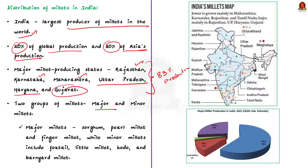Two groups of millets are grown in India — major millets and minor millets. The major millets include sorghum, pearl millet or bajra, and finger millet or ragi. The minor millets include foxtail, little millet, kodu and barnyard millet.